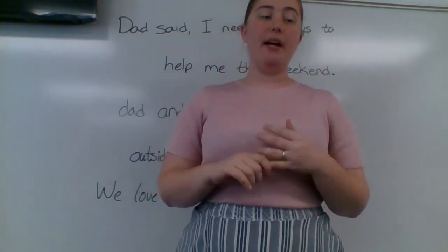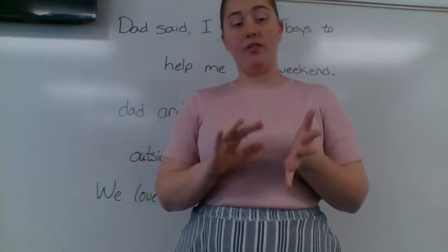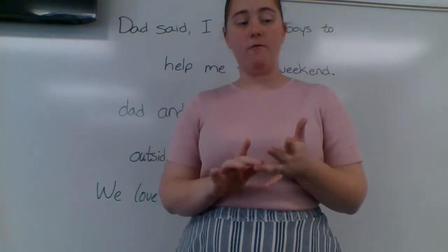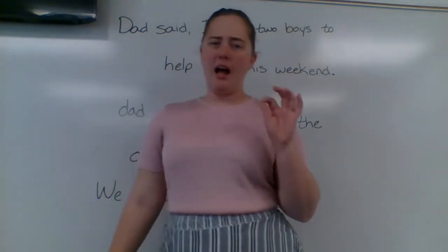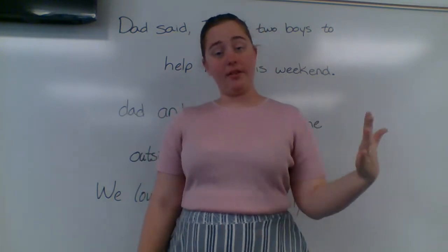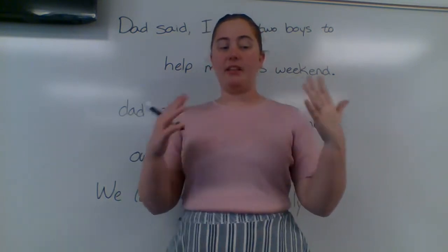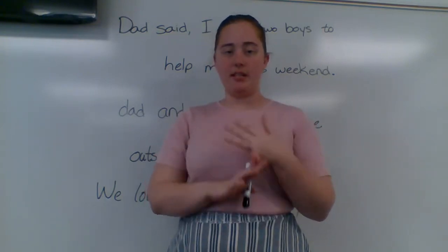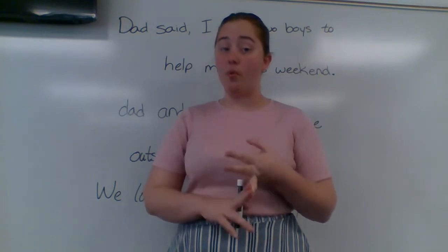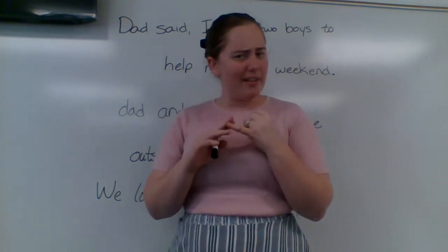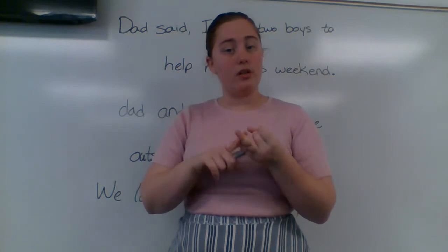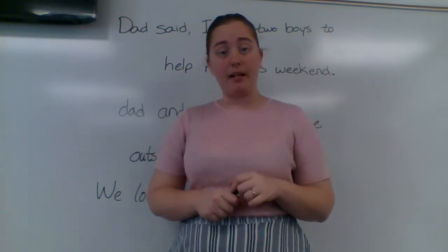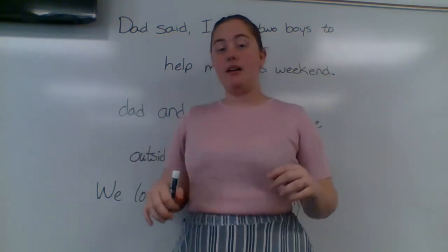On page 175, for Remember A we are doing the odd numbers: one, three, five, seven, and nine. For Remember B we are doing the even numbers: two, four, and six. I am not going to do Remember B with you because you can do that on your own — you are just adding ER, EST, more, or most, and keeping in mind the irregular forms good, better, best and bad, worse, worst.